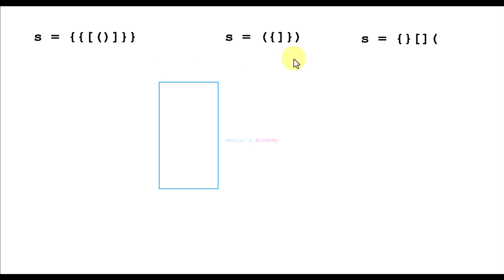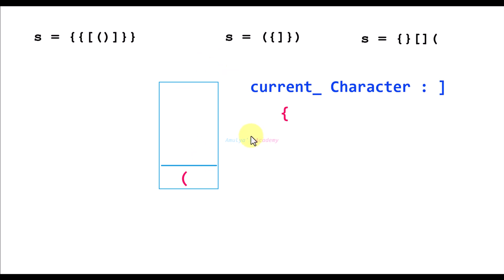Next let's take another example. First we have an open bracket — add it to the stack. Next character is also an open bracket — add it to the stack. Next we have a closing bracket. The stack is not empty, so we remove the element from the stack. The popped element and the current character — we check whether it is a valid pair. It is not a valid pair, so we conclude that it is not a valid string.